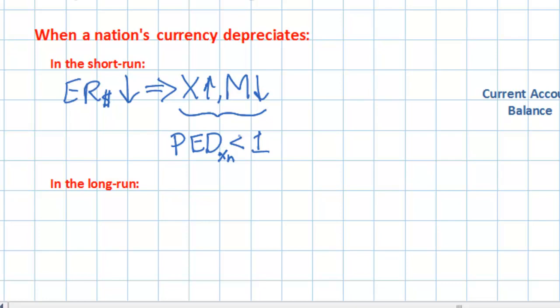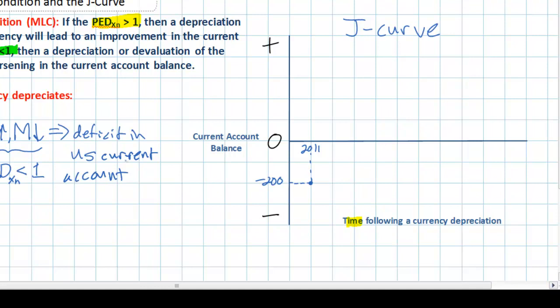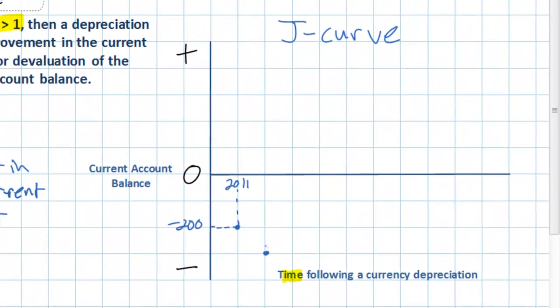If this is the case, then the change in exchange rate in the short run will actually lead to a worsening deficit in the US current account. Because Americans will continue consuming foreign goods in nearly the same quantities as before the dollar got weaker, and because foreign consumers will need time to notice the now cheaper US exports, both of these effects will combine to move the current account further into deficit. Although exports are cheaper, foreigners aren't going to buy many more in the short run, and although imports are more expensive, Americans aren't going to buy much fewer in the short run. Therefore, a depreciation of the dollar will actually lead to a worsening of the US current account deficit in the short run.